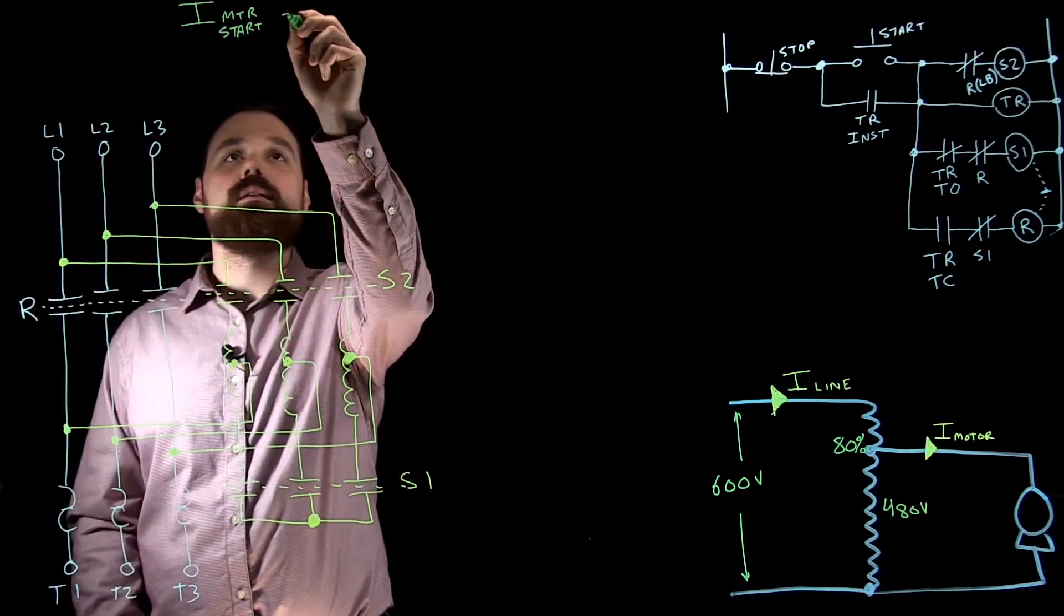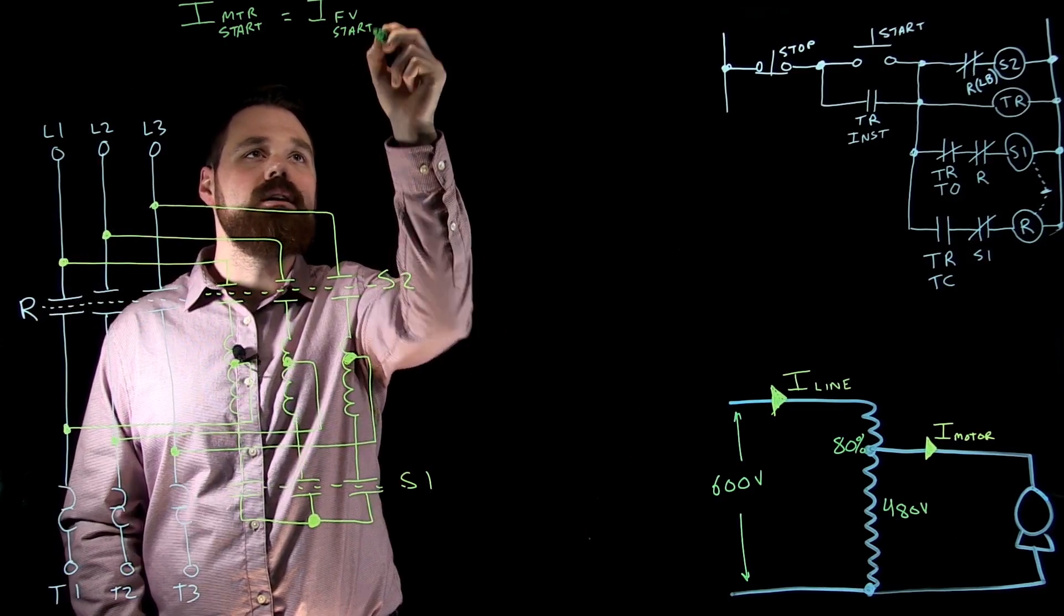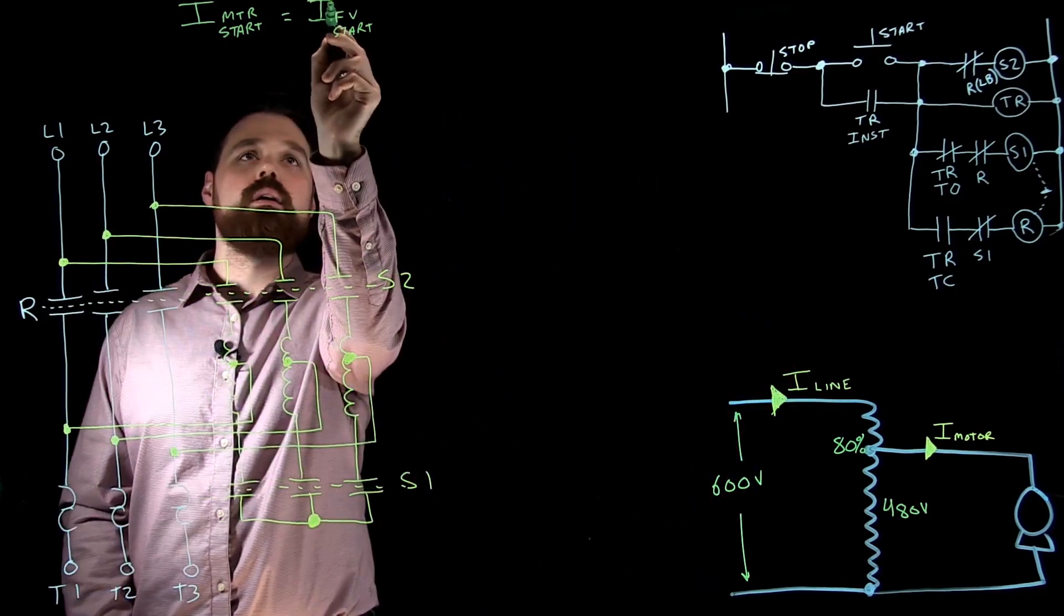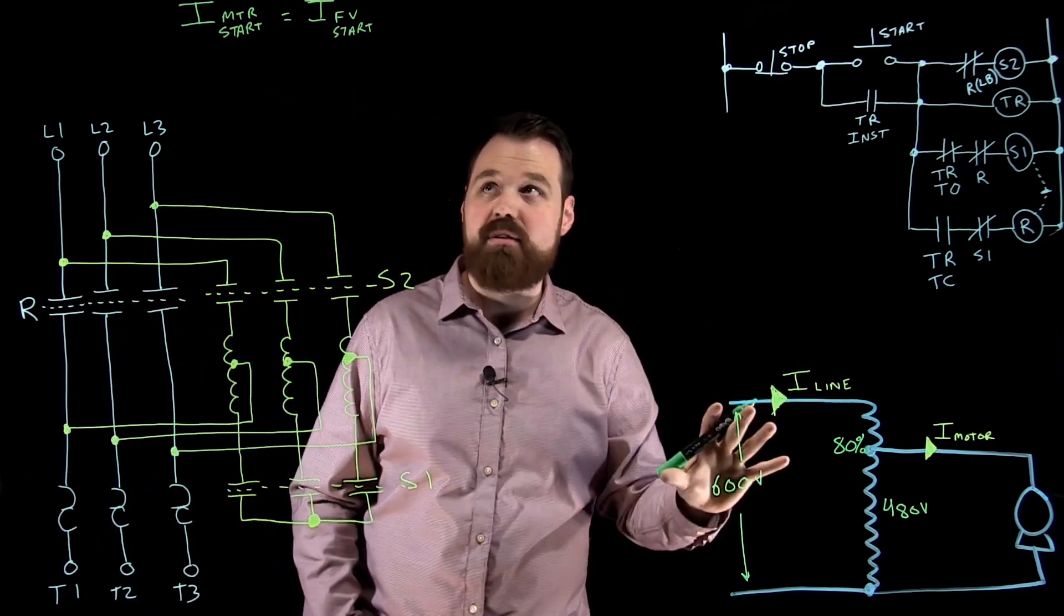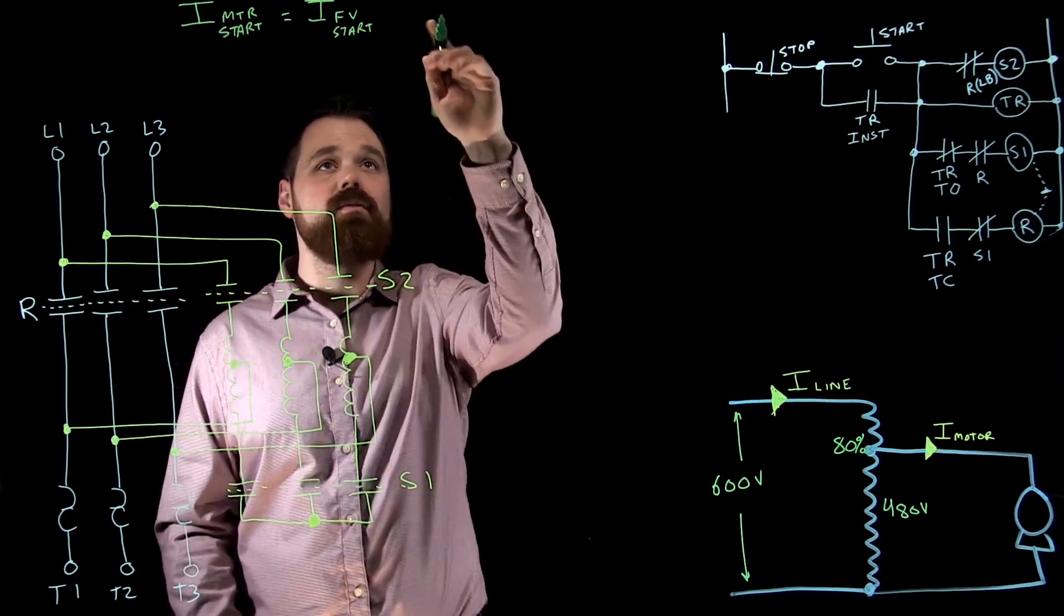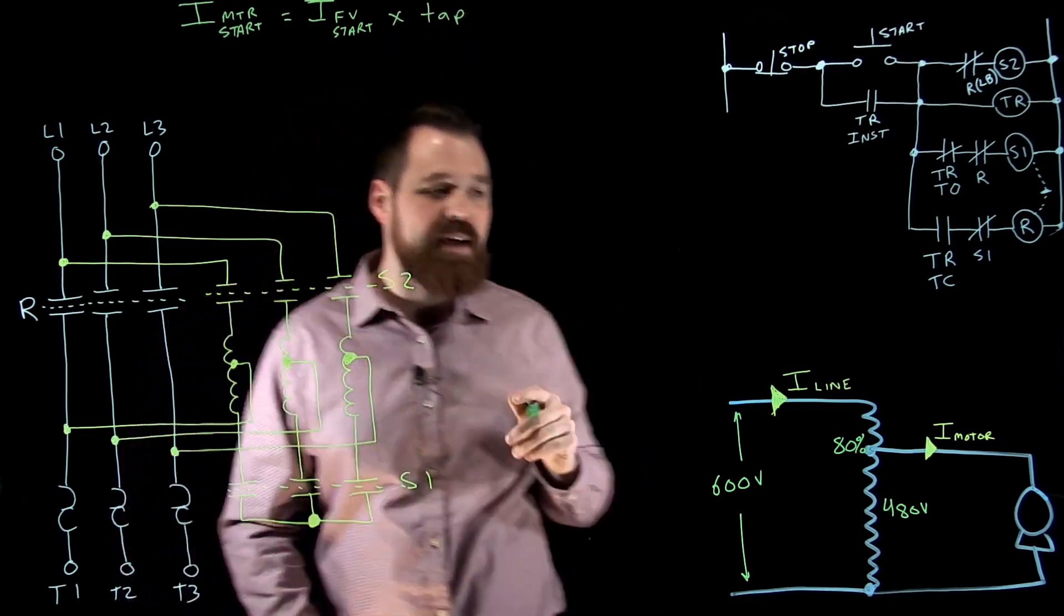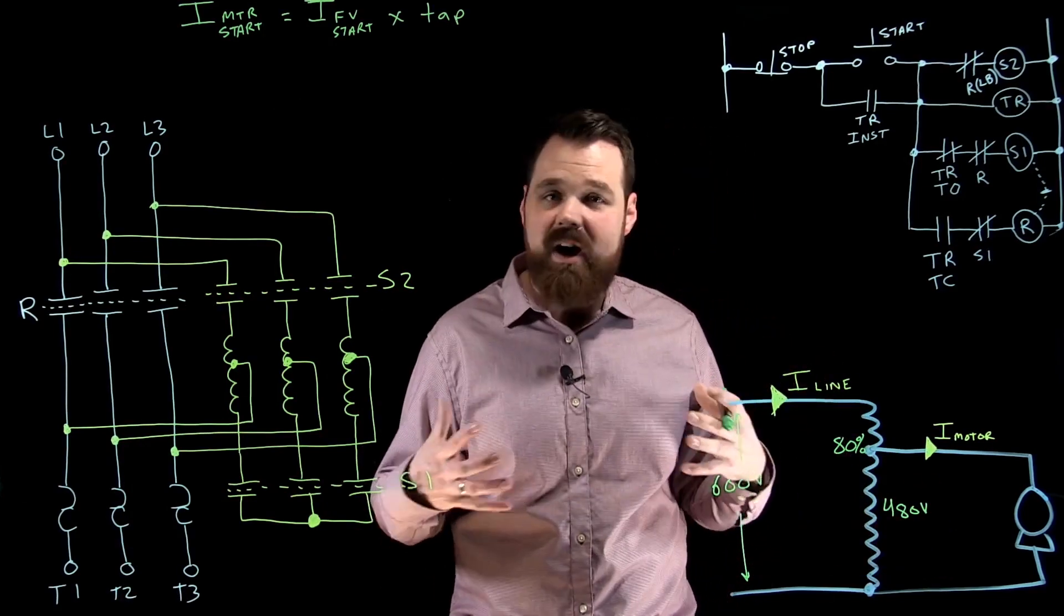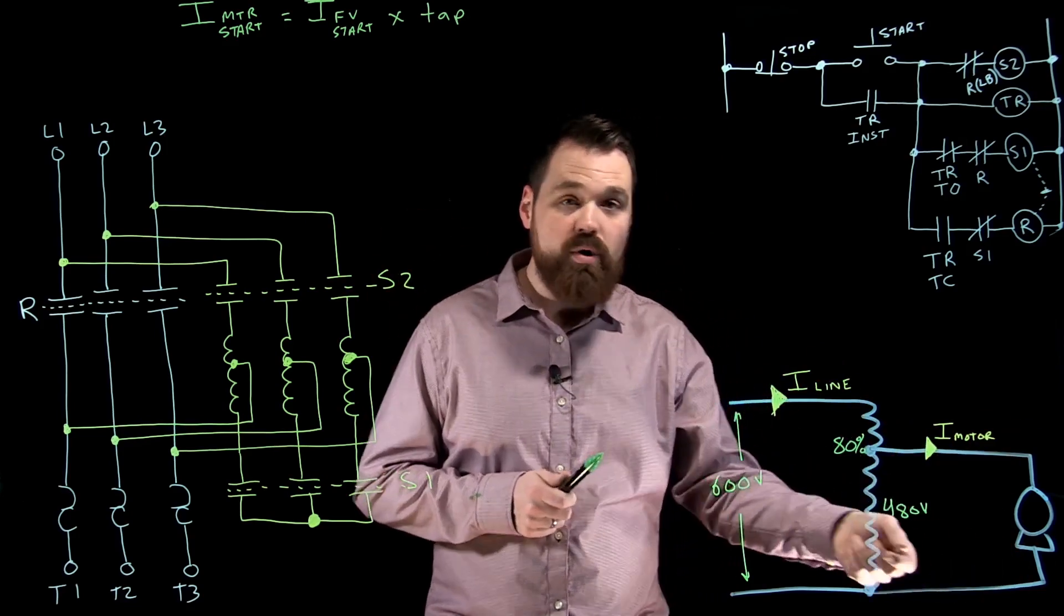The current is my I full voltage start—meaning the current I would see if I just started this motor at full voltage on 600 volts. So my I full voltage start times whatever tap I'm using. In this case, 80%, so I get 480 volts. If I was using 65 or 50, it would be different. That's the current our motor sees.